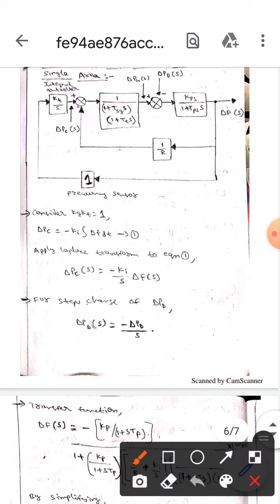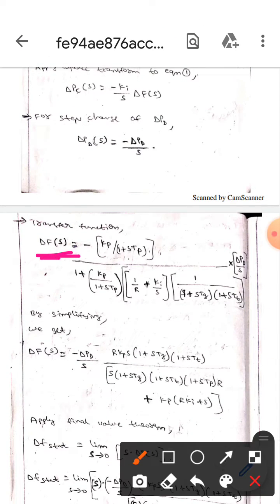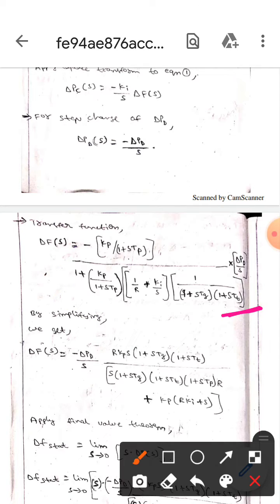For the step change of delta pd, delta pd of s equals minus delta pd by s. The transfer function we already know from the block diagram. We will write the transfer function value here, and by simplifying this transfer function we will get it like this.